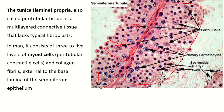This is another Sertoli cell nucleus — it contains a very big nucleus with prominent nucleolus. These are the locations of other Sertoli cells. The Sertoli cell, like a mother, holds the spermatogenic cells. All of these are the spermatogenic cells.